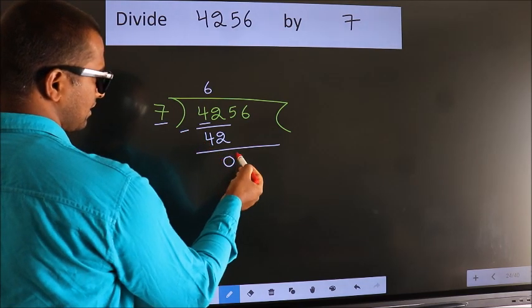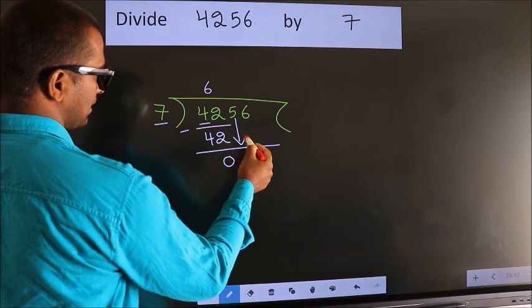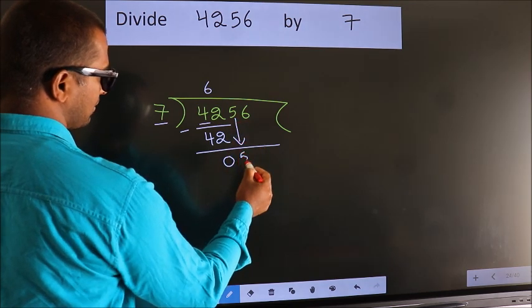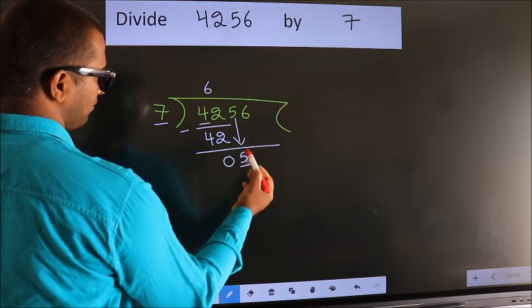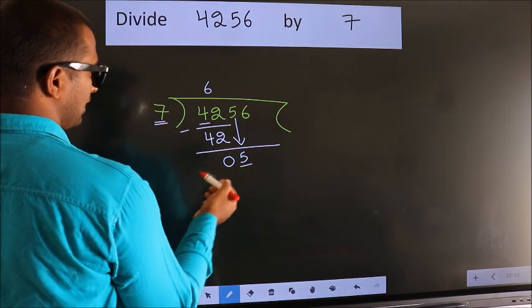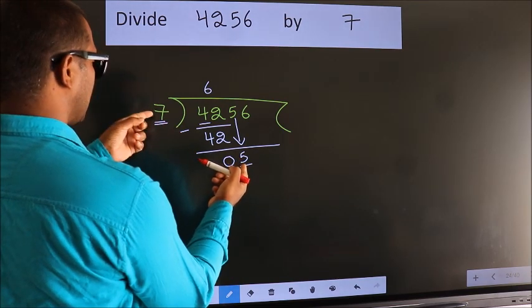After this, bring down the beside number. So 5 down. Here we have 5, here 7. 5 is smaller than 7.